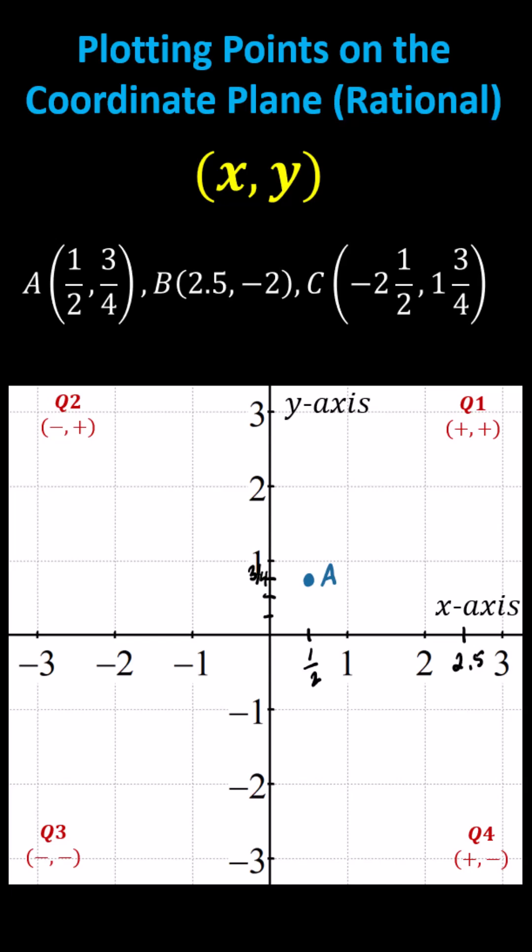To plot point B, because x is two-point-five from the origin, we move right two-point-five units. And then because y is negative two, we move down two units. Point B is located here.